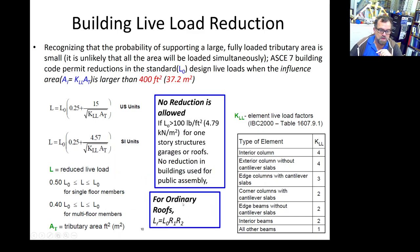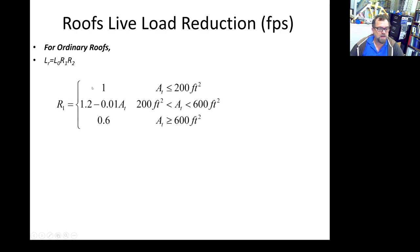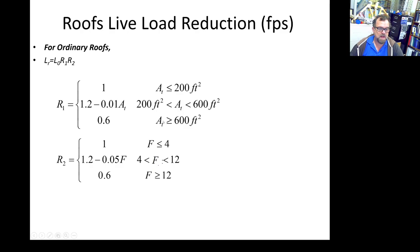For ordinary roofs, the reduction factor is obtained by multiplying two factors: R1 and R2. R1 is calculated based on the tributary area: if it's smaller than 200, R1 equals 1; if it's bigger than 600, R1 is also 1; and if it's between 200 and 600, you calculate the value based on the tributary area.